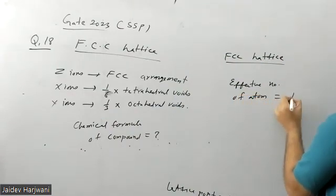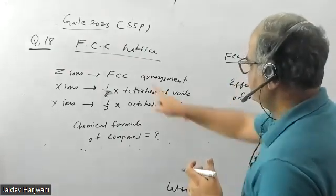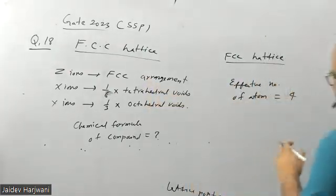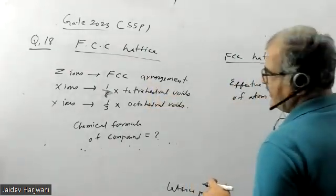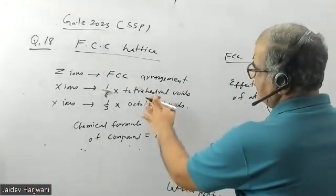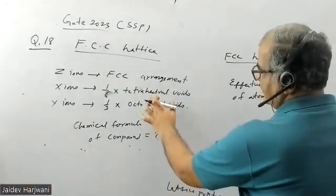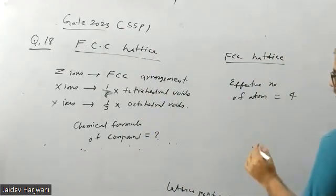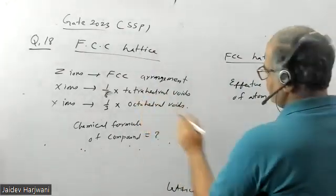So there are 4 Z ions. And in FCC unit cells there are 8 tetrahedral voids. So 8 tetrahedral voids, and one-sixth, so X ion occupies one-sixth of these 8 voids.